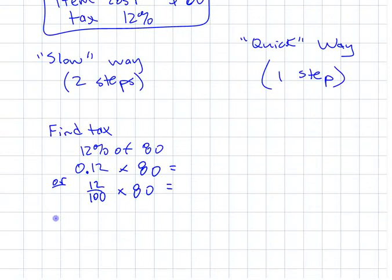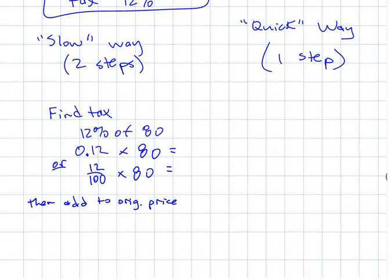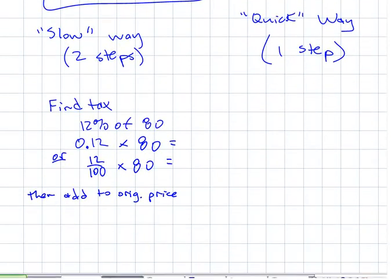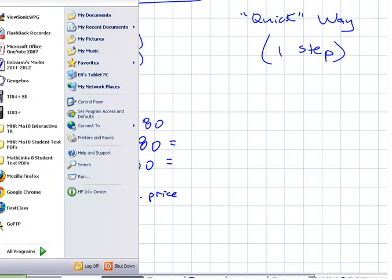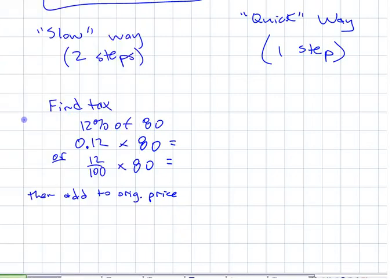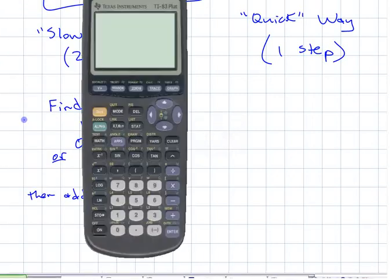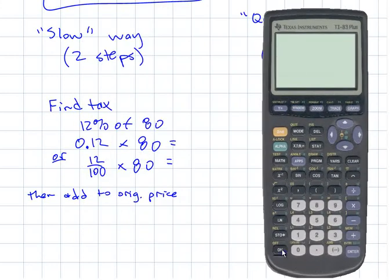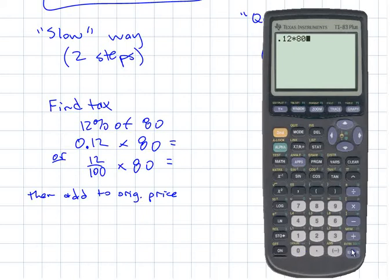Then after you find the tax, then add to original price. What is that tax? We have 0.12 times 80, which is 9.6. What does that mean? How much is that? 9 dollars 60 cents.